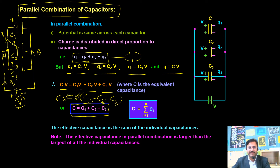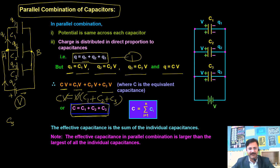Remember that the value of equivalent capacitance in a parallel combination is more than that of the highest individual capacitance present in the combination — its value is maximum.